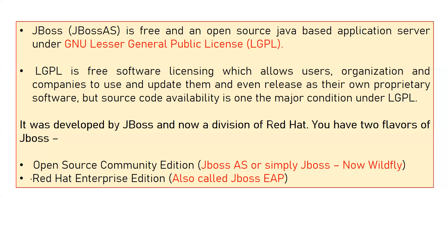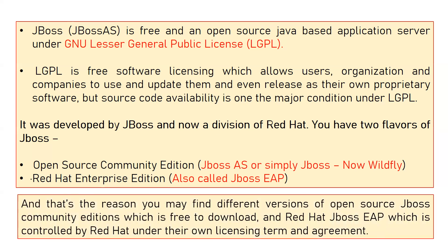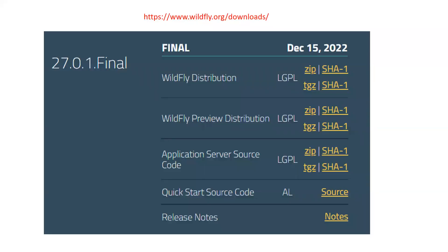When we talk about the open source community edition, it comes as simply JBoss or JBoss AS, and the third name is WildFly. So the open source naming conventions for JBoss are: JBoss AS, or simply JBoss, which is now WildFly. If you hear about WildFly, JBoss, or JBoss AS, someone is talking about the open source software. But if you are talking about the enterprise version from Red Hat, then it is JBoss EAP, which comes with enterprise support. That is the reason you find different versions — the open source JBoss community edition, which is free to download, and Red Hat EAP, which is controlled by Red Hat under their own licensing terms and agreements.